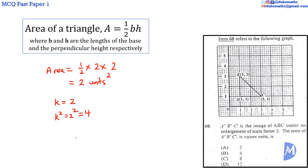Therefore, the area of A prime, B prime, C prime, is equal to 2 units squared multiplied by 4. 2 multiplied by 4 is 8. So, 8 units squared. The answer is C.